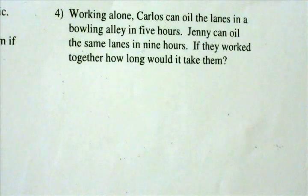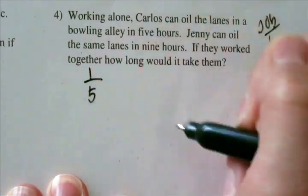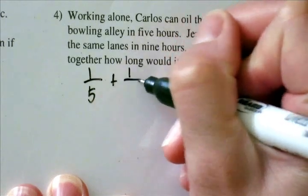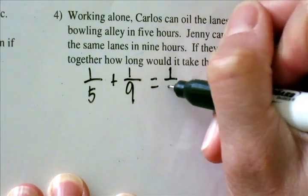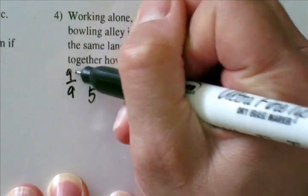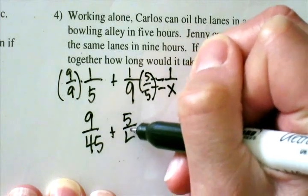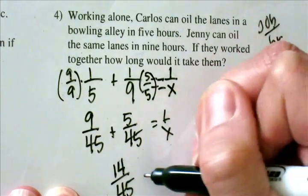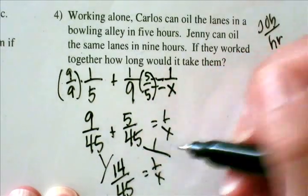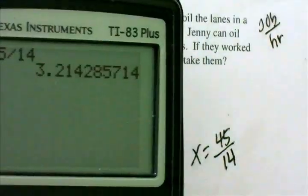Problem 4: Working alone, Carlos can oil the lanes in a bowling alley in 5 hours. Jenny can oil the same lanes in 9 hours. If they worked together, how long would it take them? Finding the common denominator of 9 times 5, I take 9 over 9 and 5 over 5, giving me 9 over 45 plus 5 over 45 equals 1 over x. 9 plus 5 is 14, so 14 over 45 equals 1 over x. Taking the inverse or cross-multiplying, x equals 45 divided by 14, which is 3.21 hours.